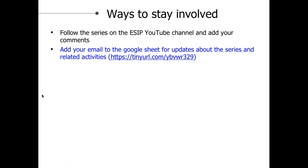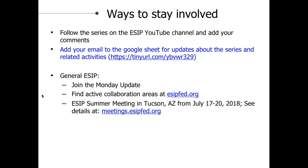Some other ways to stay involved: add your email to the Google sheet, join the Monday update, and look at the ESIP website, ESIPfed.org, for collaboration areas and clusters you might want to join. ESIP has biannual meetings — the next meeting is in Tucson, Arizona from July 17th to the 20th, and registration is open now. The plenary will be focused on the socioeconomic value of earth science data, with specific sessions on that theme as well.